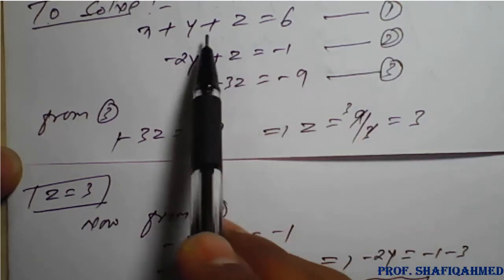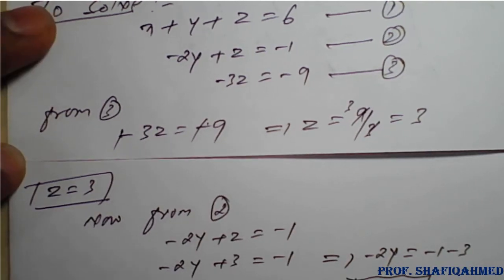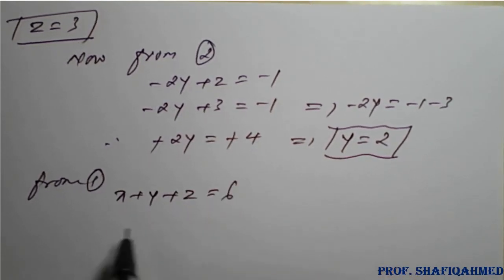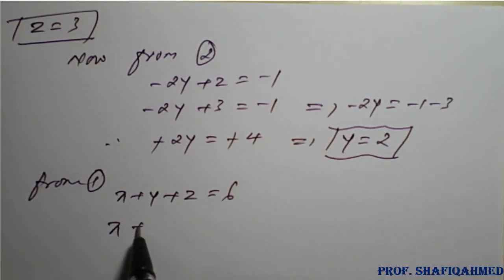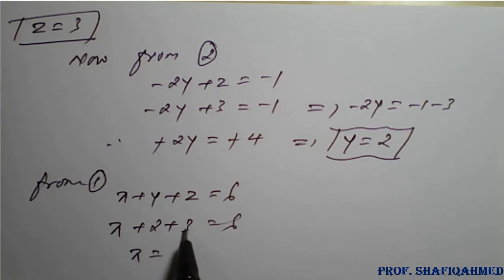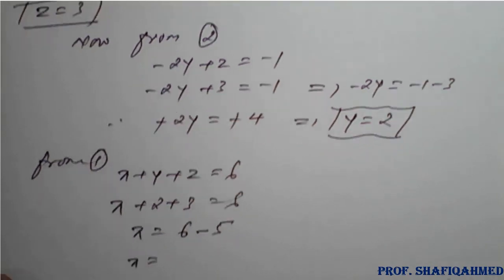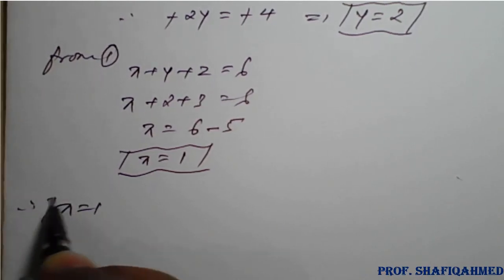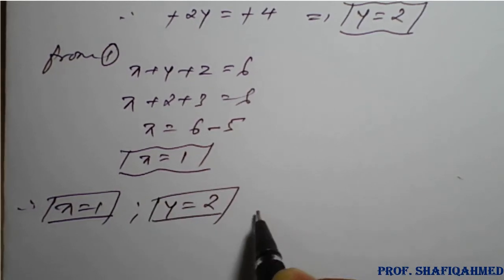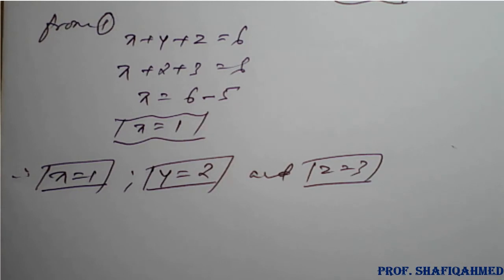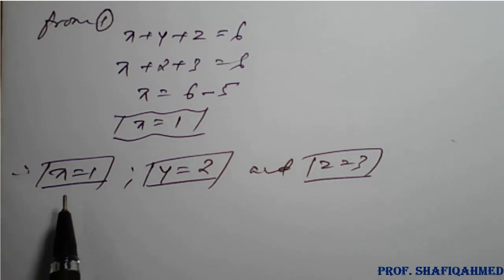From equation 1: x plus y plus z equals 6. Substituting y equals 2 and z equals 3 gives x plus 2 plus 3 equals 6, so x equals 6 minus 5 equals 1. Therefore, x equals 1, y equals 2, and z equals 3 are the required values of the unknowns, satisfying the given system of equations.